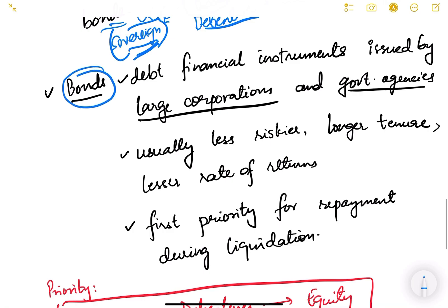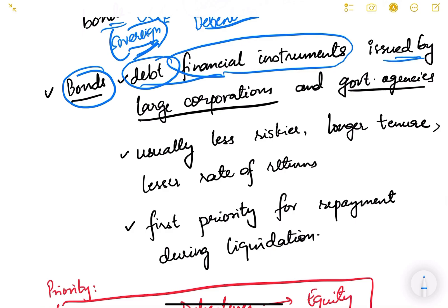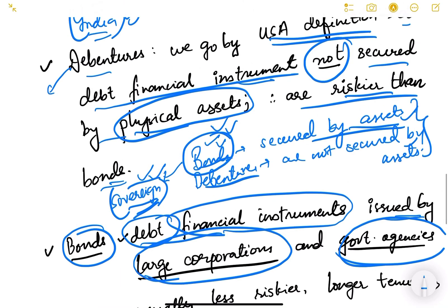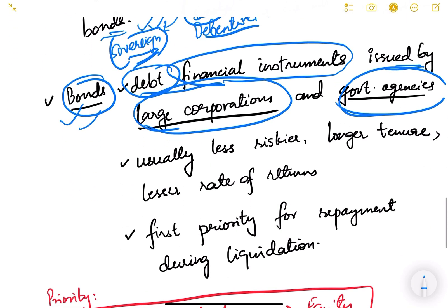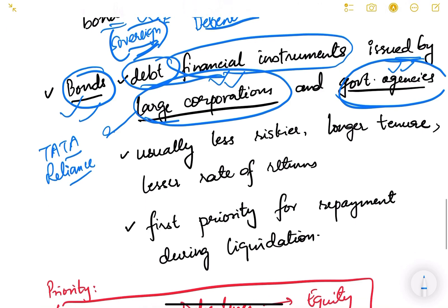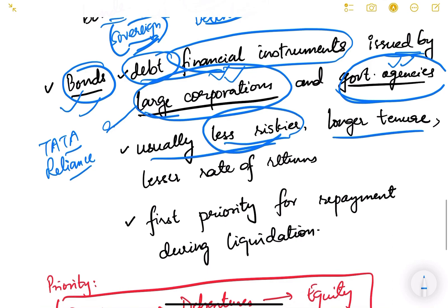Bonds are debt financial instruments issued by large corporations or government agencies. Debentures are issued only by private companies — whatever debt security the government issues will always be called a bond, never a debenture. Bonds are issued by the government as well as large corporations like Tata or Reliance. They are usually less risky, have longer tenure, and offer a lesser rate of return.